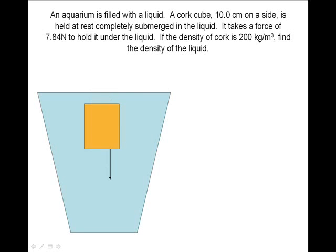The force holding the cork down, FH, is equal to 7.84 Newtons. There are two other forces acting on the cork: the weight of the cork and the buoyant force.